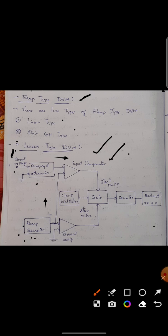The input comparator has two signals. Now this comparator will compare both the signals. If the input voltage and ramp generator value are equal, then there will be no output generated.